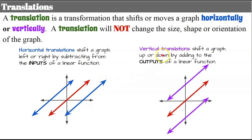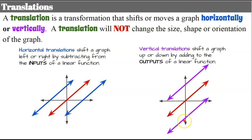Vertical translations shift a graph up by adding to the outputs. Think of vertical as our range or outputs. It changes our graph and shifts it up if you add to the outputs, and shifts it down if you subtract from the outputs.